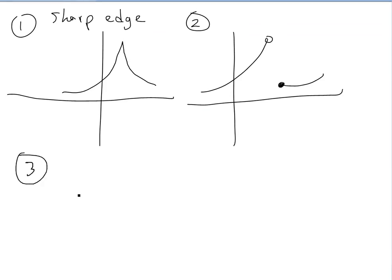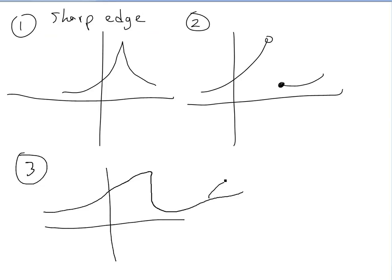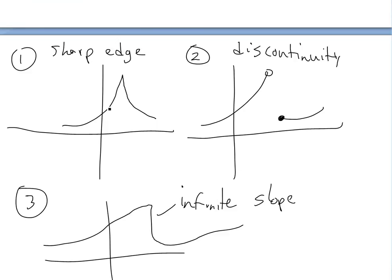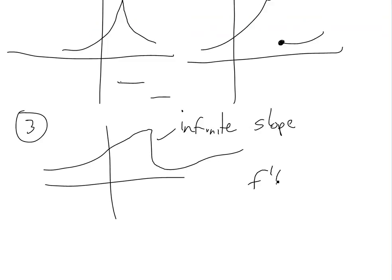The third case is if you have a vertical section of curve that gives you an infinite slope. For the sharp point case, if you take the derivative approaching from one side, it's going to be different from the other side — the limit from the left does not equal the limit from the right, so there's no single derivative. Similarly for the discontinuity, f prime will have a break. For the infinite slope case, f prime of x equals infinity at that point, which is not defined — so it's not differentiable.